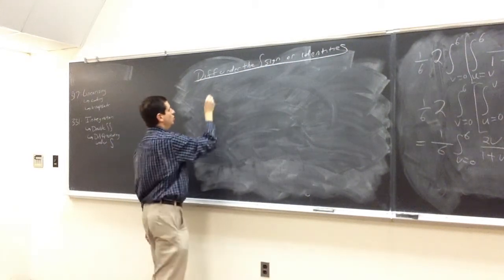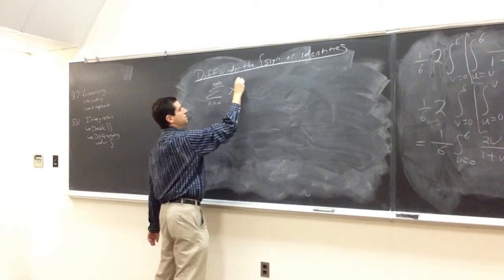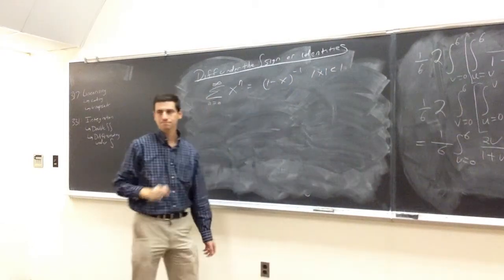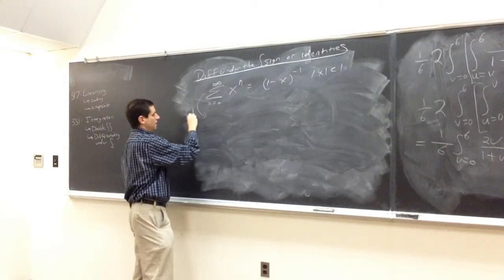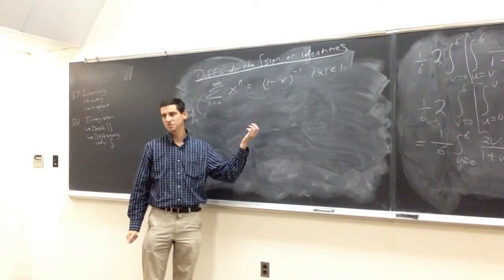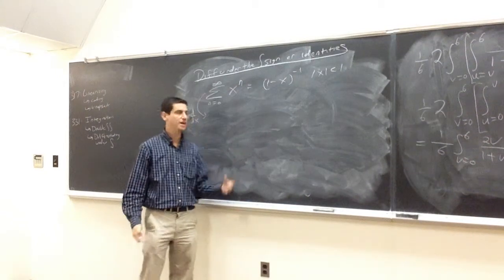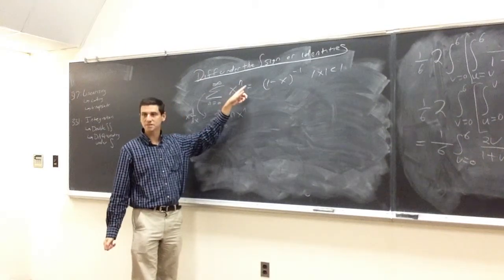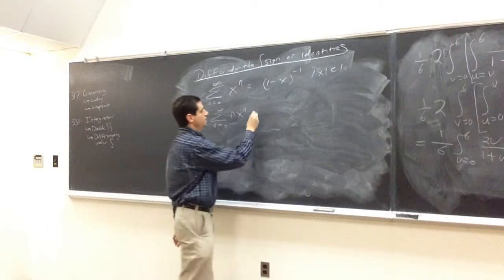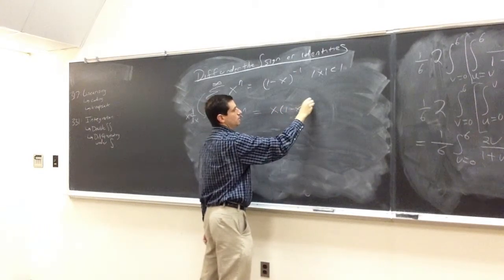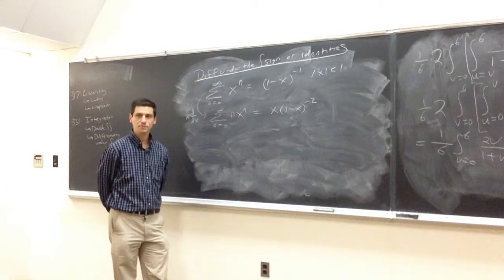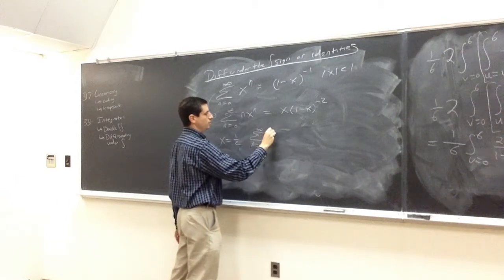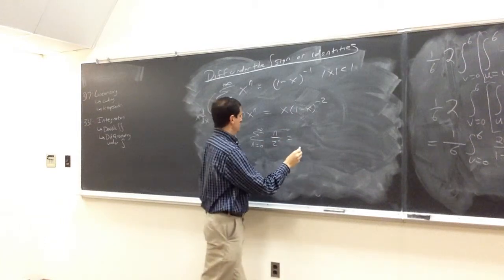We actually did one of these earlier in the semester: the sum from n=0 to infinity of x^n equals 1/(1−x) for |x| < 1. We applied the operator x d/dx, and since the derivative of a sum is the sum of the derivatives, we get the sum of n·x^n equals x/(1−x)². Setting x = 1/2 gives the beautiful formula: the sum from n=0 to infinity of n/2^n equals 2.